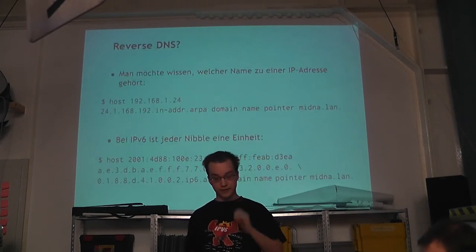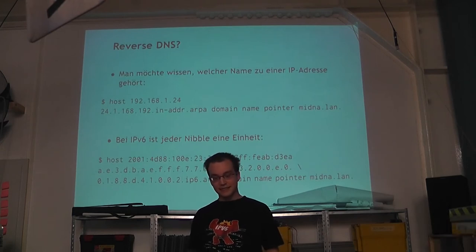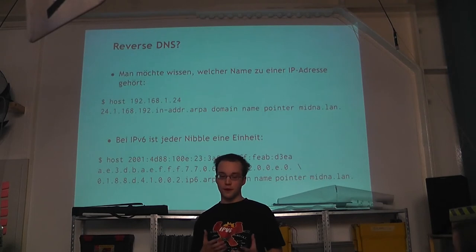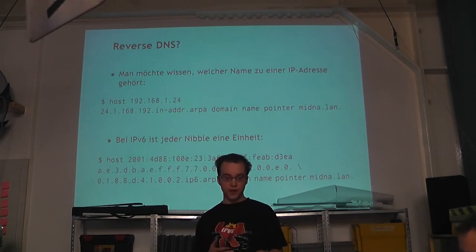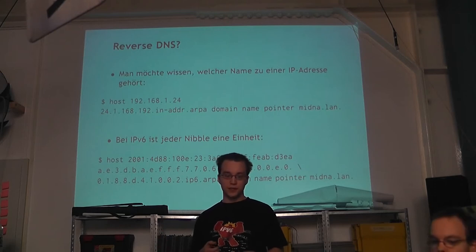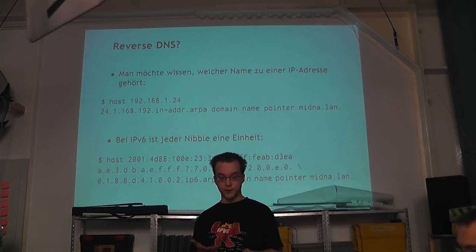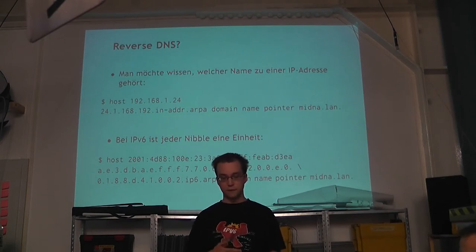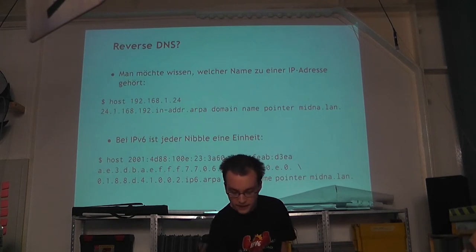What is Reverse-DNS? Reverse-DNS refers to resolving an IP address to a name. That means you have an IP address like 192.168.1.24, and you want to know which domain name belongs to it. You can find this out on Unix with the host command — you simply type 'host 192.168.1.24' and you get the answer. In this case, the domain name ends with .lan.